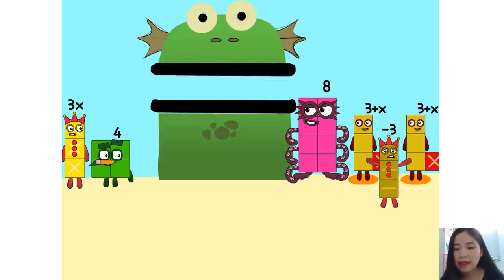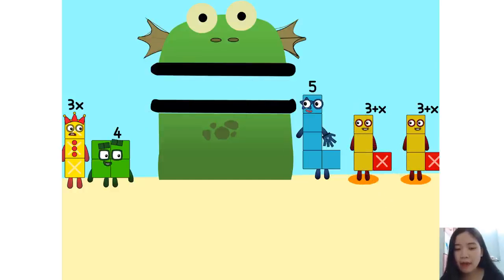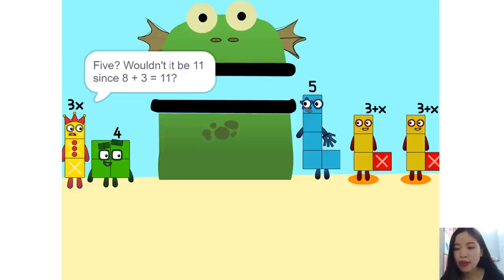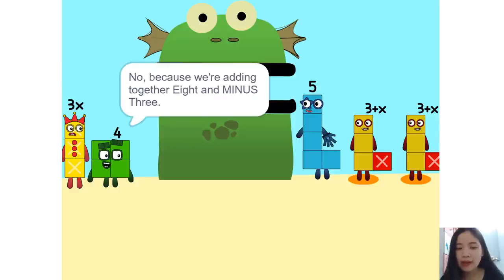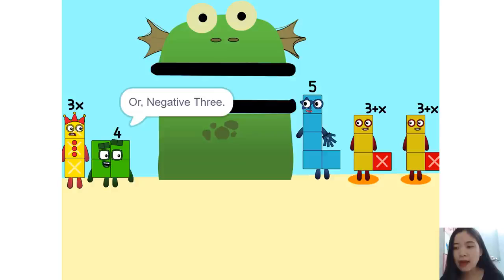We can also add these together. 5. Wouldn't it be 11 since 8 plus 3 is 11? No, because we're adding together 8 and minus 3, or negative 3. So it's 5.